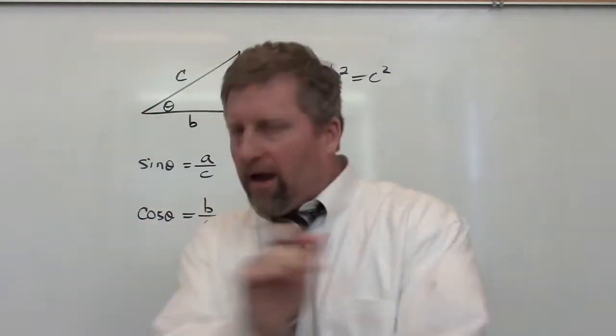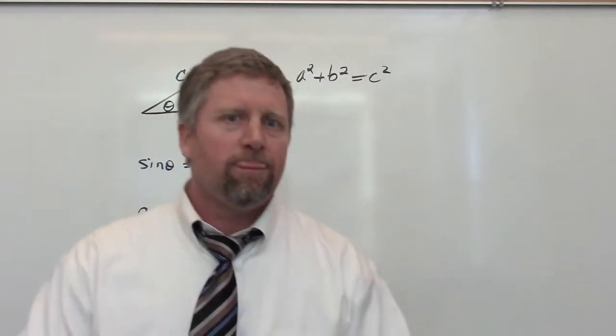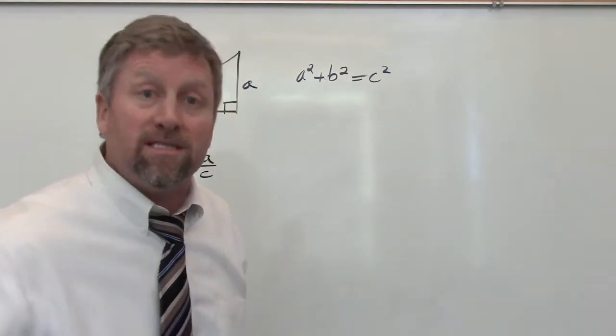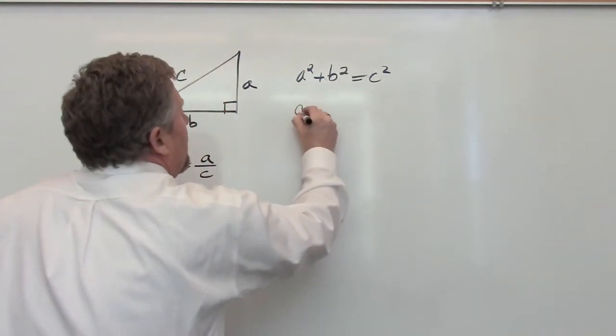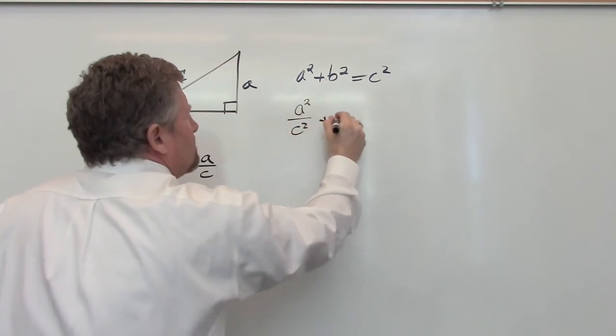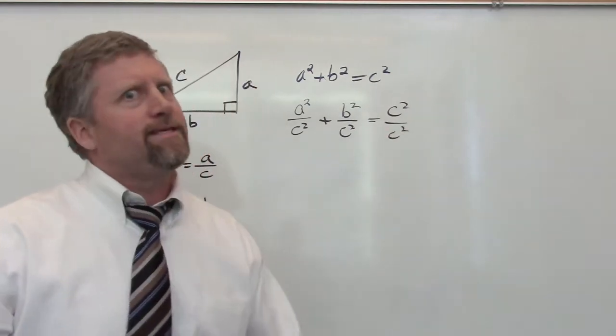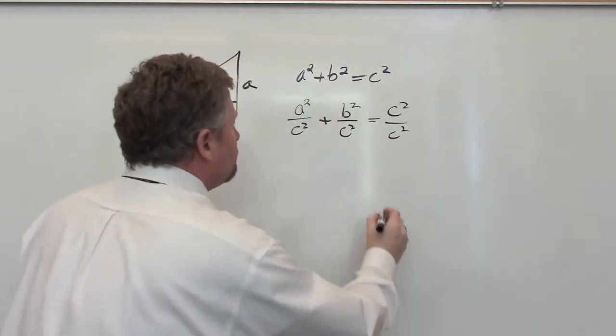Okay, now using straight up algebra, I'm going to take this equation and manipulate it very simply by dividing both sides by C squared. A squared over C squared plus B squared over C squared equals C squared over C squared. What's C squared over C squared? One.